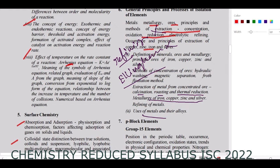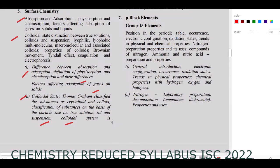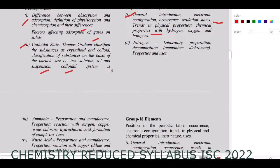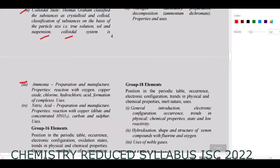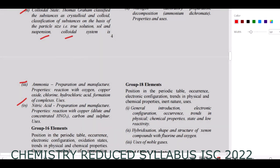For P Block Elements, starting with Group 15: general introduction, electronic configuration, oxidation state, occurrence, physical properties, chemical properties with hydrogen, oxygen, and halogens are present. Preparation of ammonia and preparation of nitric acid are there. However, the various nitrogen oxides and their preparation are not in the reduced syllabus.